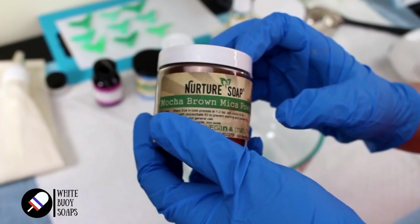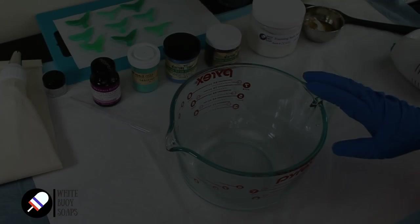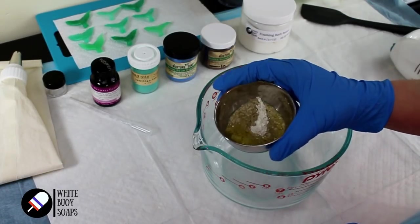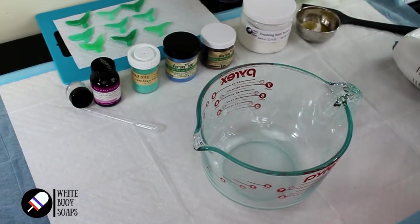Now the Mocha Brown is going to be used in a very small amount as we're trying to achieve a sand-like color, and then of course we have our foaming bath butter in here. We have our kale and clay and jojoba oil.